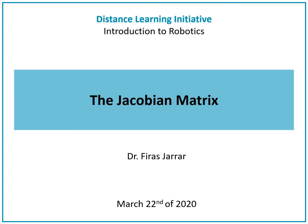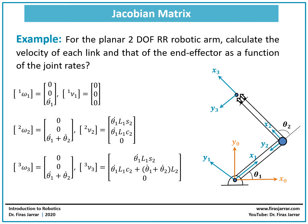Introduction to robotics: the Jacobian method. In the previous lecture, we started with a planar two degrees of freedom RR robotic arm. We were able to obtain the angular velocity of link 1 and link 2, as well as the linear velocity of the same two links. We also computed the angular and linear velocity of the end effector, or frame 3. Today we're going to focus on the angular and linear velocity of the end effector.